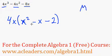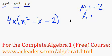We can look for two numbers that multiply to negative 2 and add up to negative 1. Those two numbers will be negative 2 and positive 1.